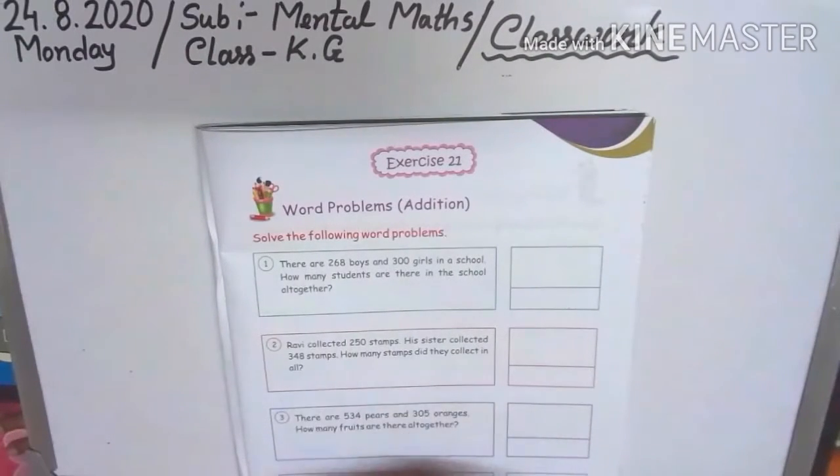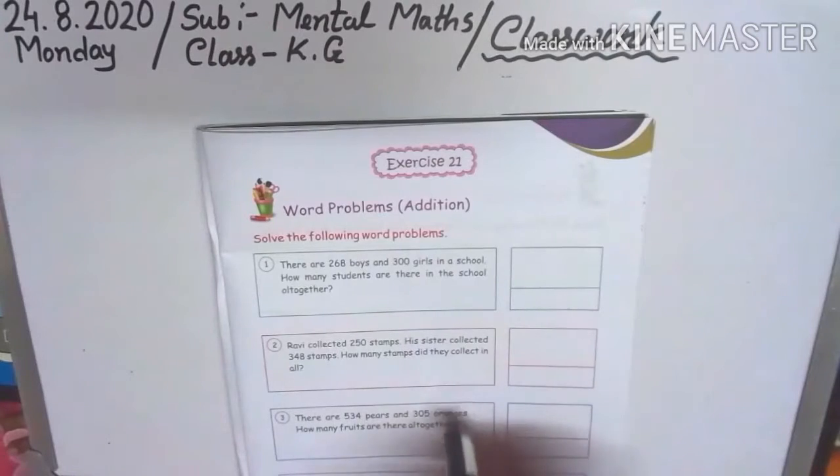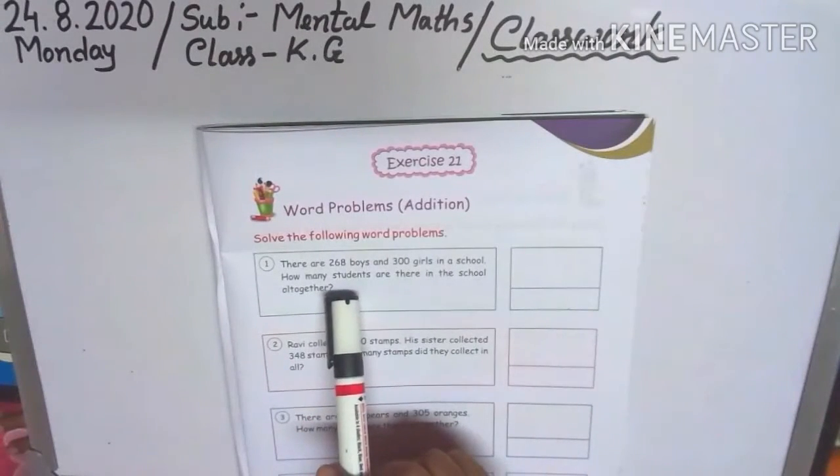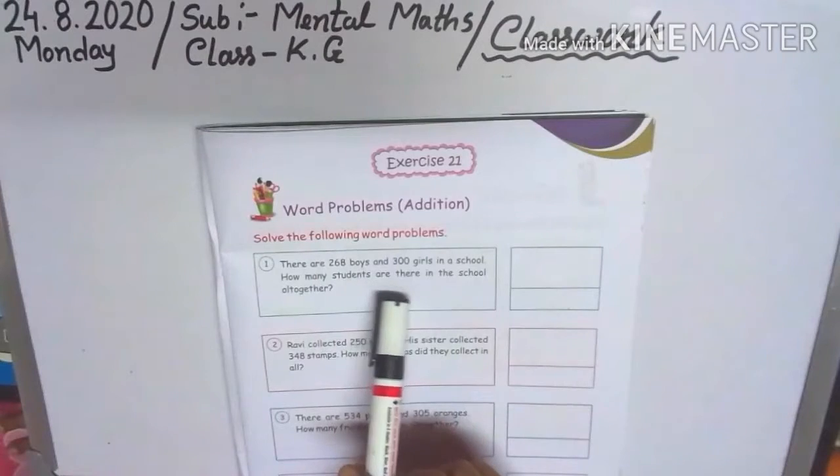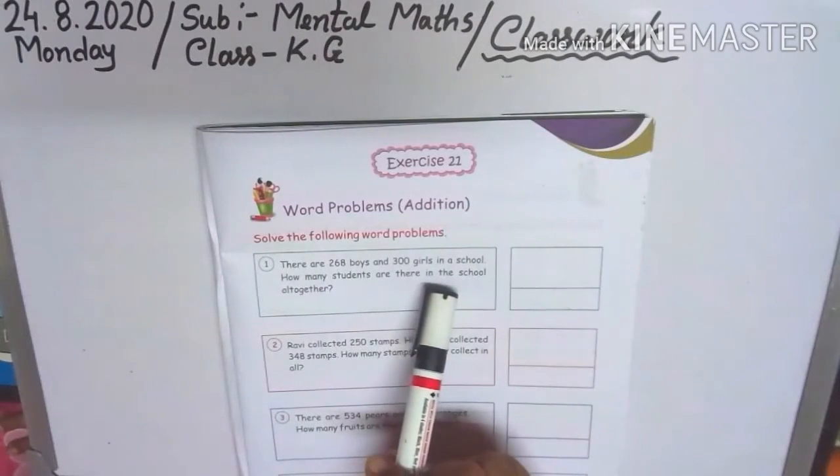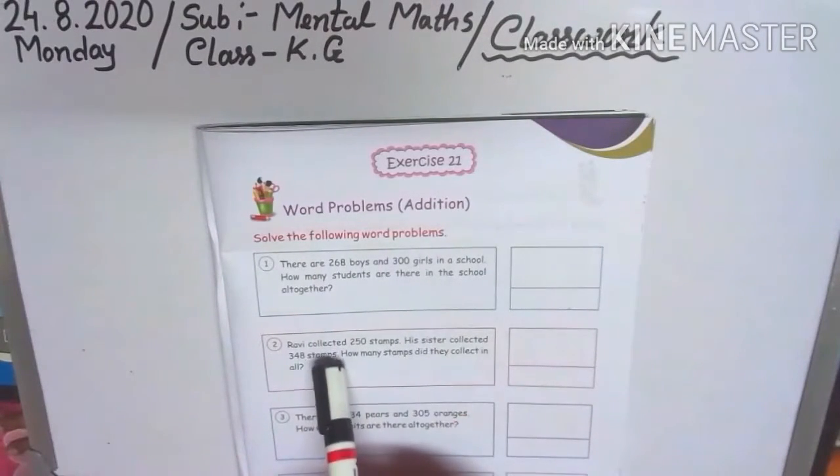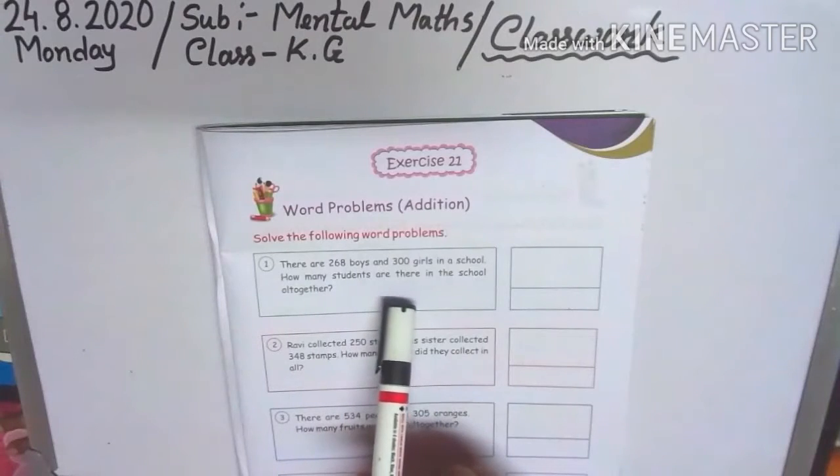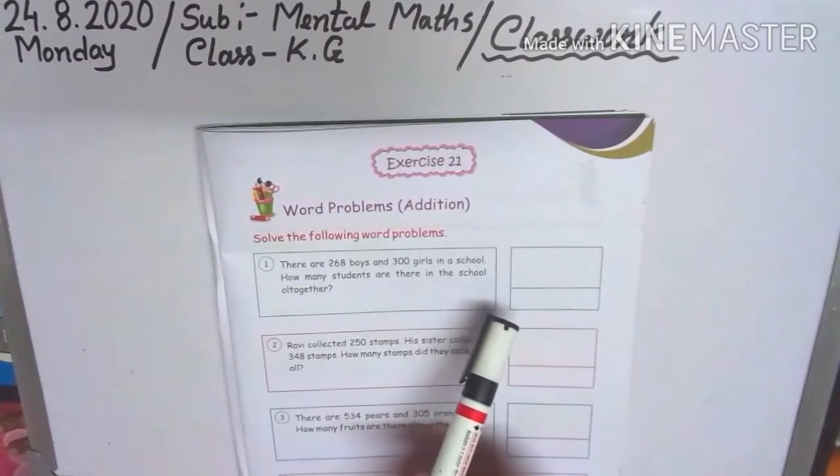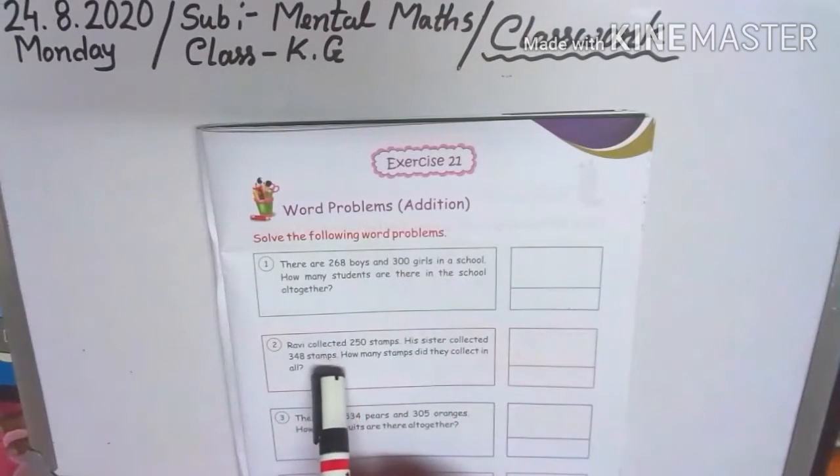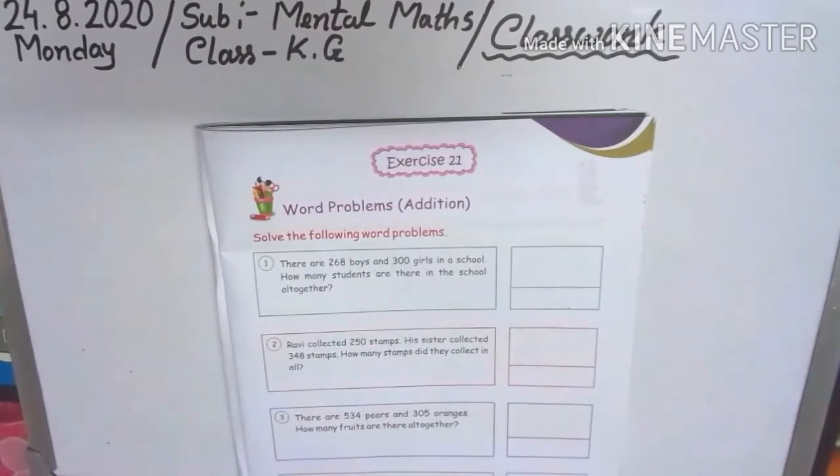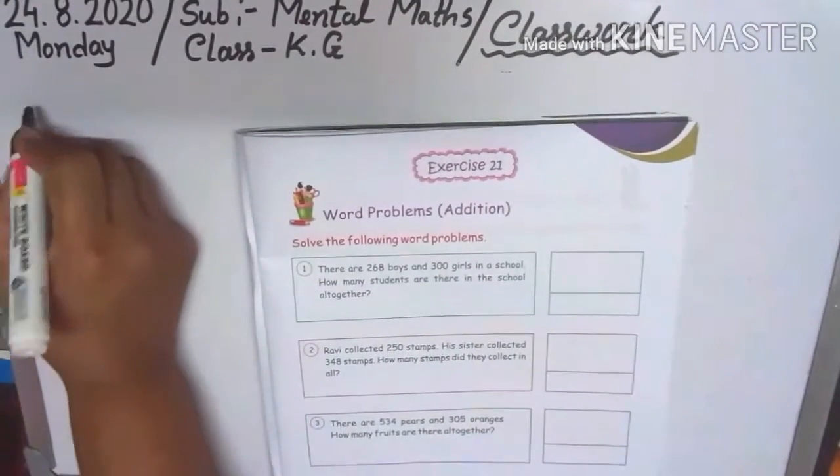1, 2, 3, 4. Addition. There are 268 boys and 300 girls in our school. How many students are there in the school all together? Number 1, total number of students.